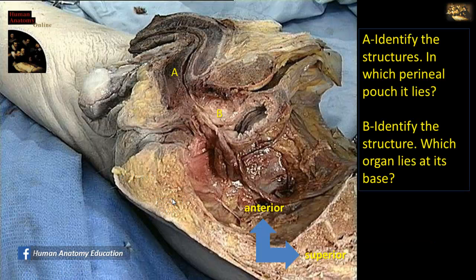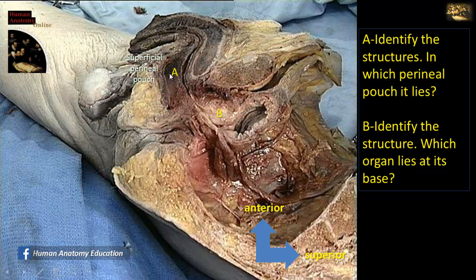You are asked to identify structure A and in which perineal pouch it lies. This is a sagittal section of a male pelvis. Structure A is the bulb of the penis, and it is located in the superficial perineal pouch. The superficial perineal pouch, in both sexes, contains the root of the penis or the clitoris covered by the muscles related to them.